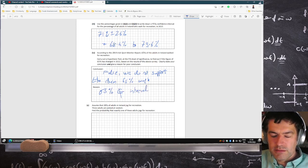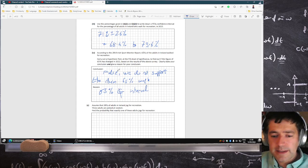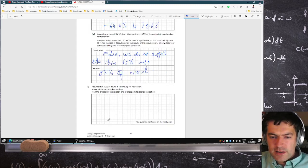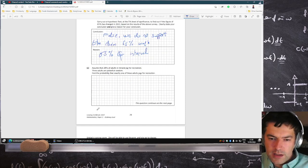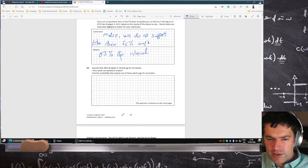It's not in the confidence interval—it begins at 68. Assume that 20% of adults in Ireland jog for recreation. Three adults are picked at random. Find the probability that exactly one of these adults jogs for recreation.